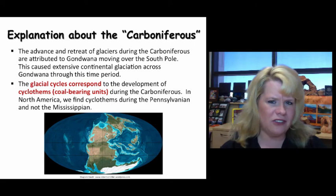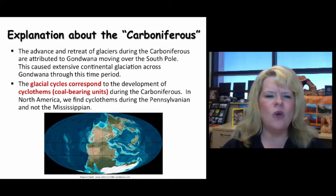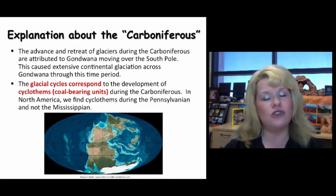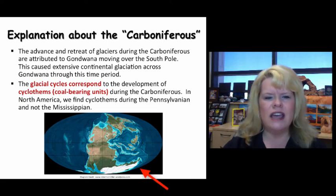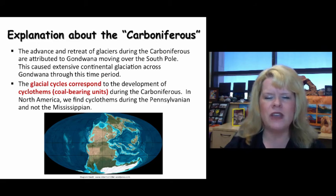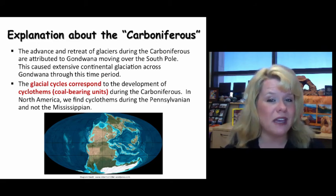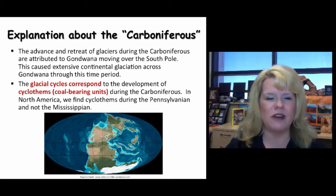What caused this unique situation to occur during the Carboniferous? We had advancing and retreating of glaciers during the Carboniferous attributed to Gondwanaland moving over the South Pole. As this transition occurred, extensive continental glaciation occurred, which led to cycles of rise and fall of sea level. In many areas, this was a very slight rise and fall, but enough to make an important set of rock formations that are full of coal throughout the Carboniferous.